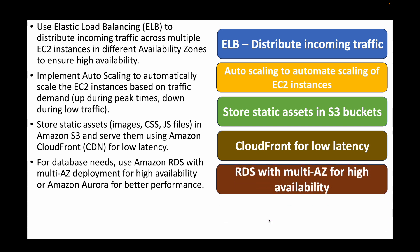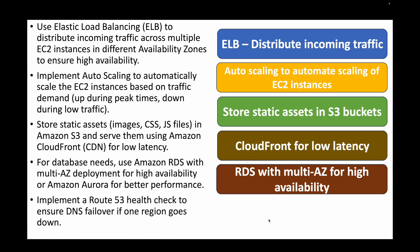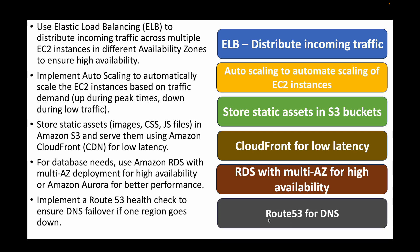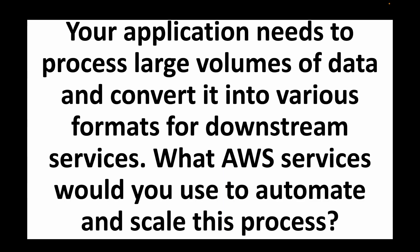For the database, we can use Amazon RDS with multi-AZ deployment to ensure high availability, or Amazon Aurora for better performance. Finally, we implement Route 53 as our DNS with health checks to ensure DNS failover if one region goes down. So essentially we'll have EC2 instances with a load balancer, Route 53 DNS, Auto Scaling, S3 buckets, CloudFront, and Amazon RDS.